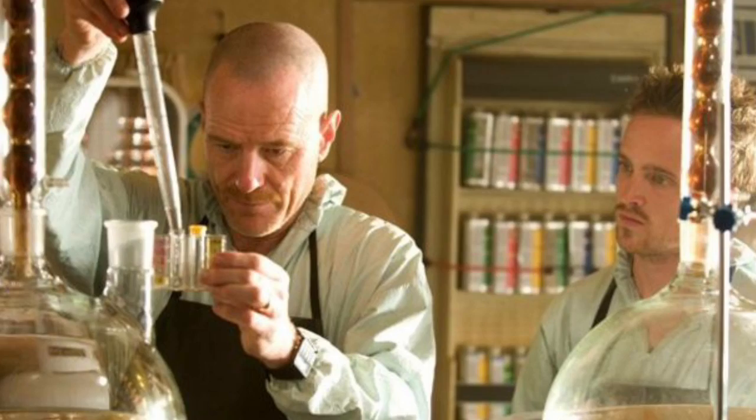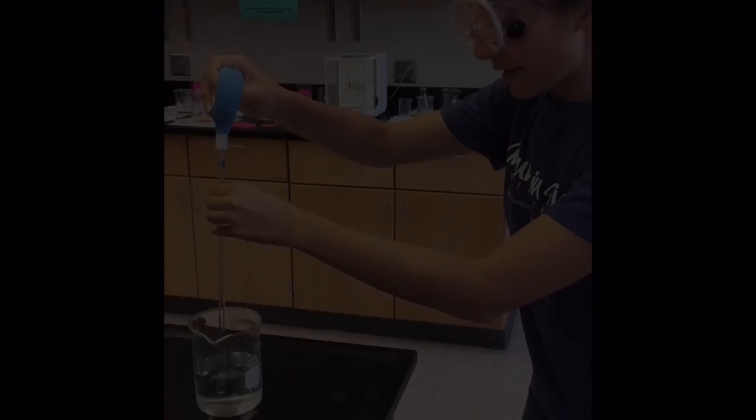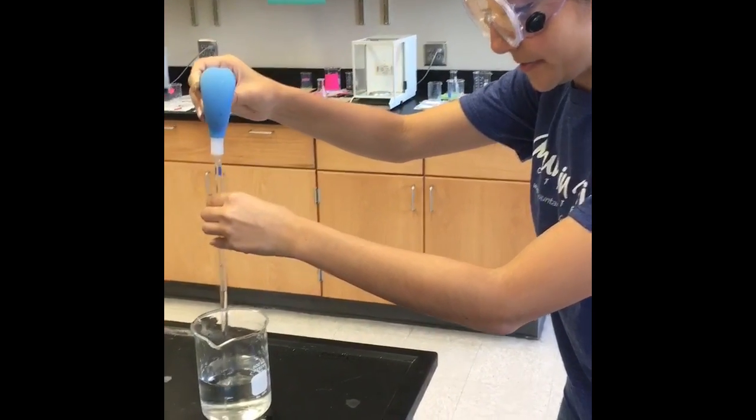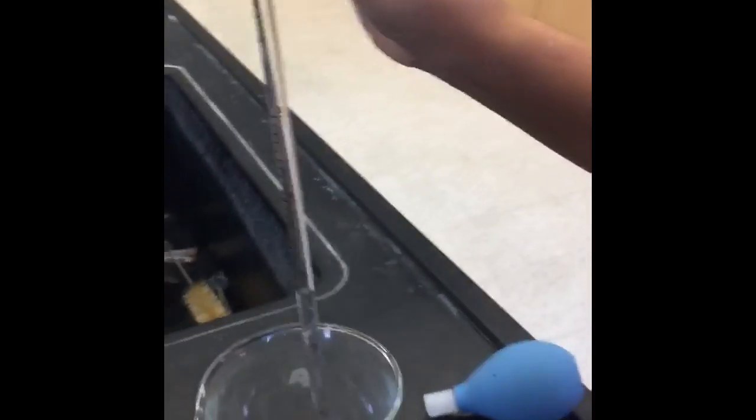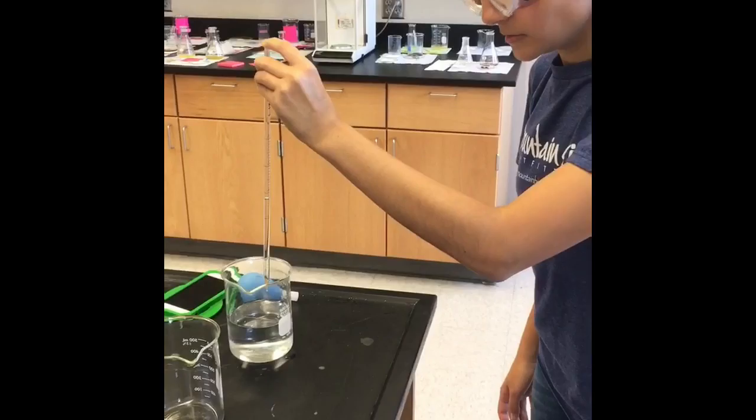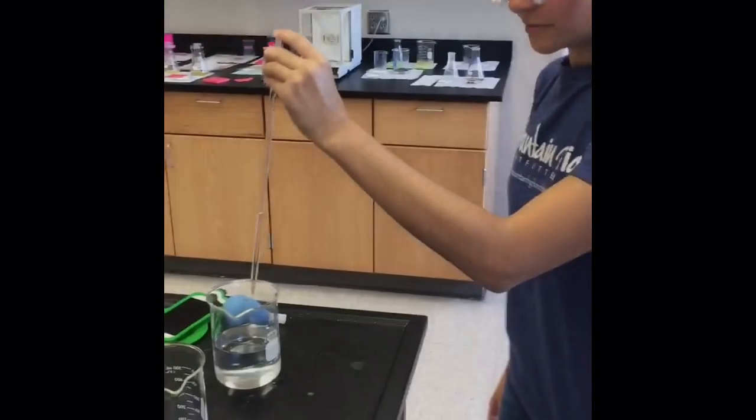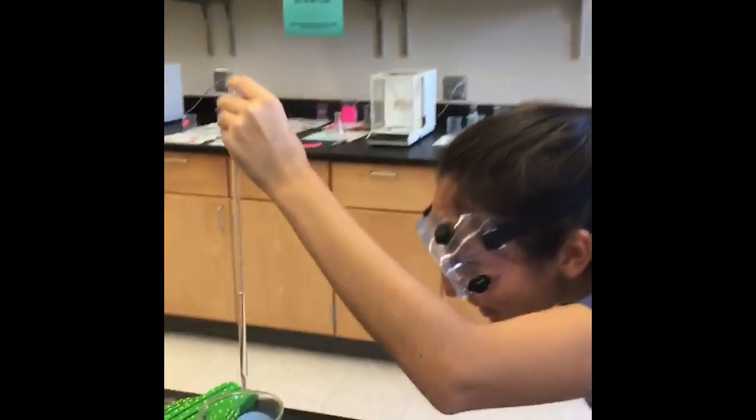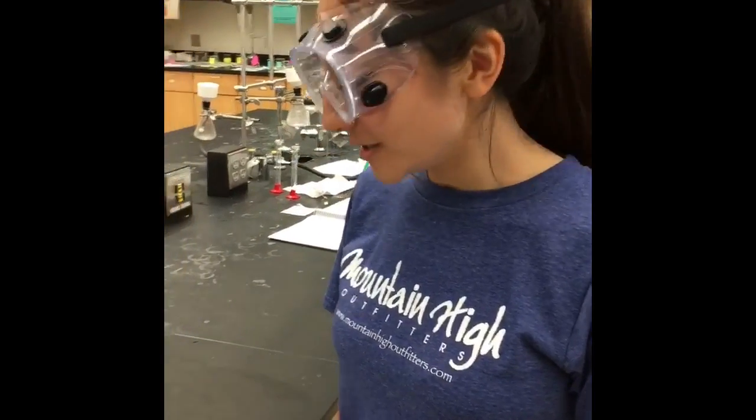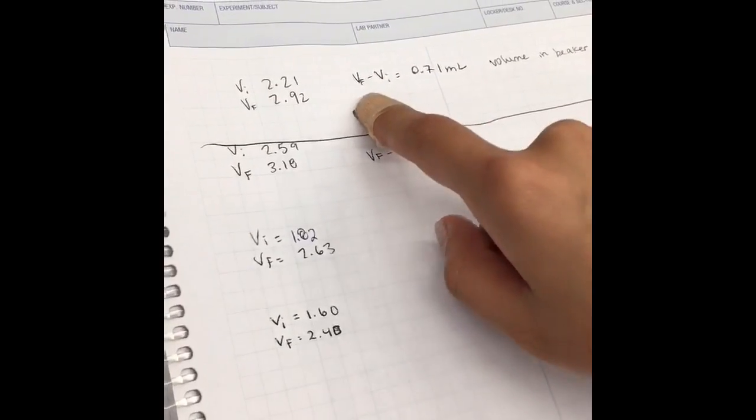Let's take a look at how Amy measures volume from a pipette by reading from the meniscus. The initial volume is 2.21. The final volume is 2.92. The volume of the beaker amounts to be 0.71 milliliters, and I found that by subtracting the initial volume from the final volume.